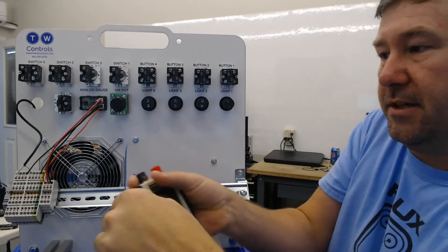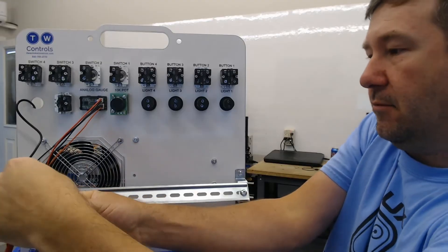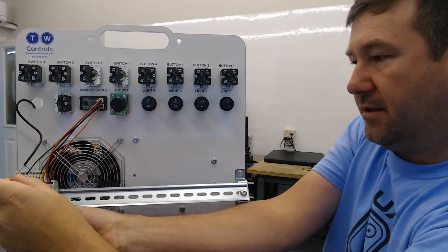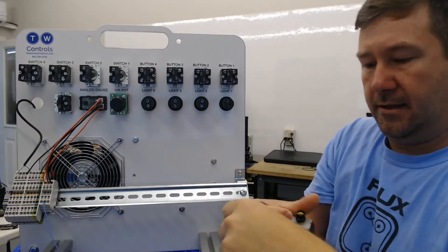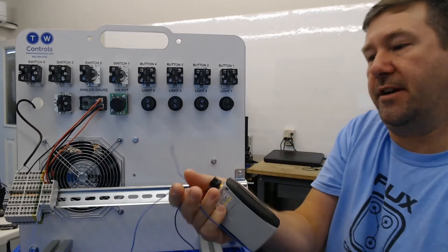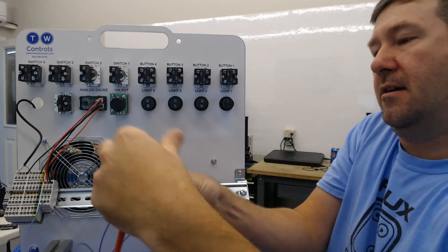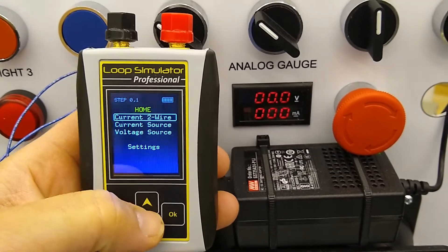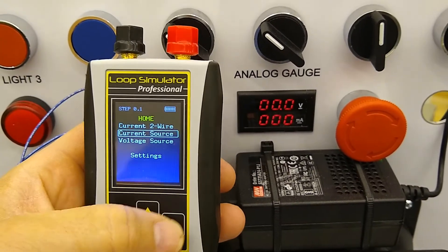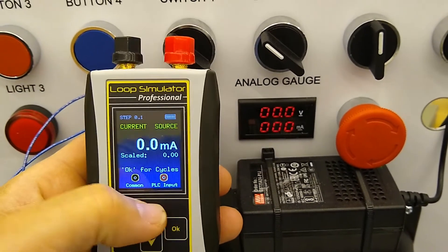So, here's the positive of our transmitter. We'll connect it to the positive of our meter. And here's the negative of our transmitter. And we'll connect it to the negative of our meter. This time, instead of selecting current 2-wire, we'll select current source, which is a 4-wire device.